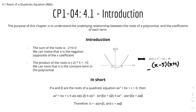In short, if alpha and beta are the roots of a quadratic equation ax squared plus bx plus c equals 0, then ax squared plus bx plus c equals a times (x minus alpha)(x minus beta). Expanding gives ax squared minus a(alpha plus beta)x plus a·alpha·beta. Therefore, b equals minus a times (alpha plus beta), and c equals a times alpha times beta.